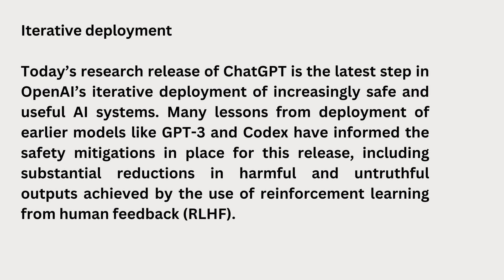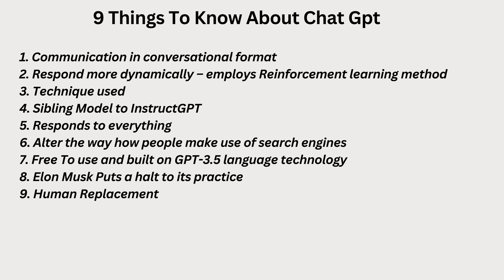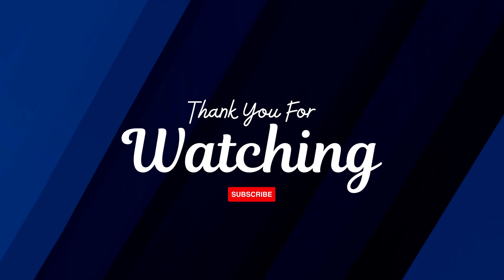Setup: install the OpenAI Python-based client from your terminal. Set your API key as an environment variable. Train a custom model: fine-tune the ADA model on a demo dataset for translating help messages from Spanish to English. Use the custom model: ask your customized model for a translation. Iterative deployment: today's research release of Chat is the latest step in OpenAI's iterative deployment of increasingly safe and useful AI systems. Many lessons from deployment of earlier models like GPT-3 and Codex have informed the safety mitigations in place for this release, including substantial reductions in harmful and untruthful outputs, achieved by the use of Reinforcement Learning from Human Feedback, RLHF.